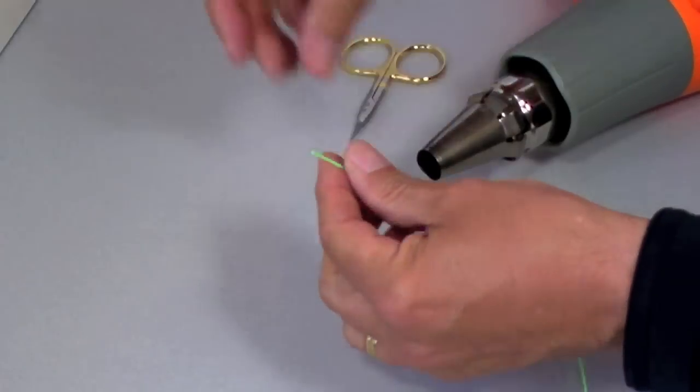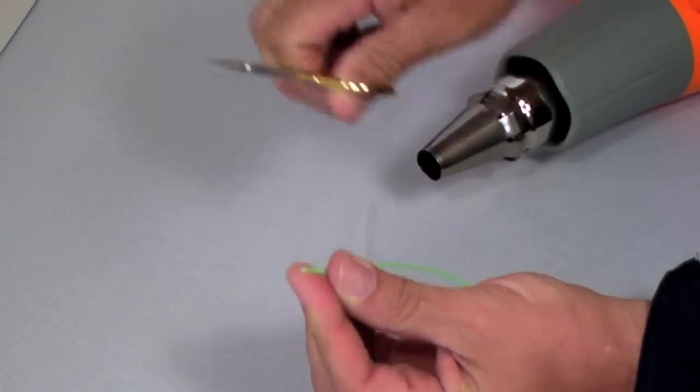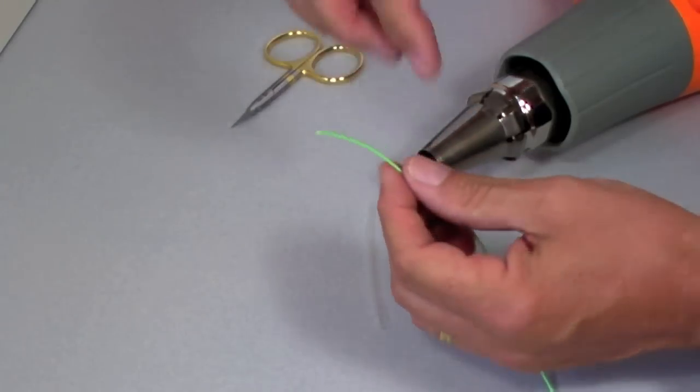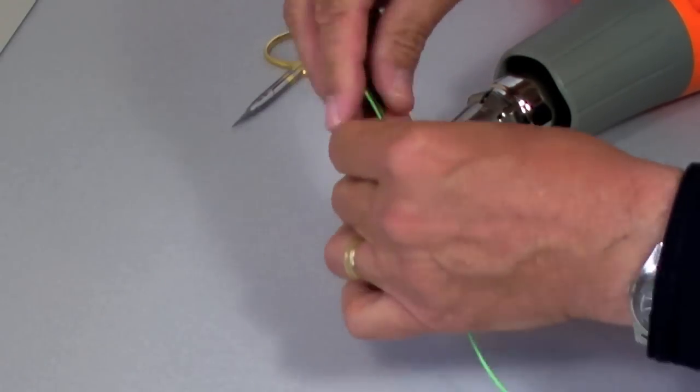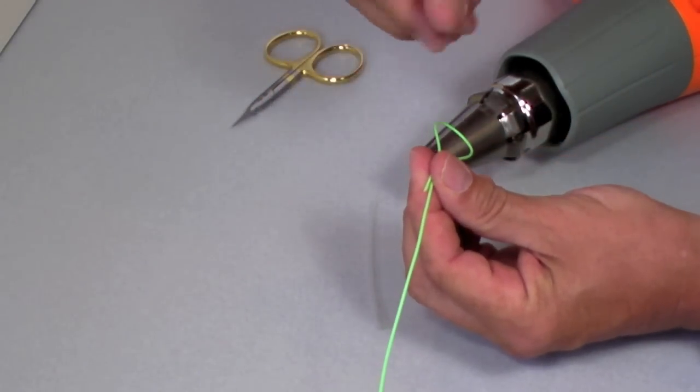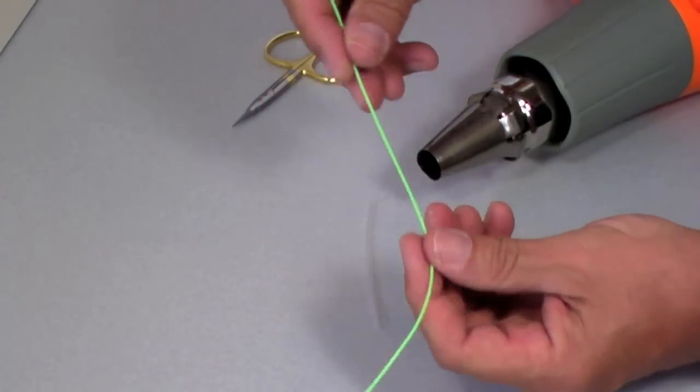The next thing we're going to do is take our fly line and just bevel the edge. The reason why we do that is to enable this edge to flow in. As we fold around here, we want it to flow into the main line. Now we don't want a lump here which could catch when we're fishing. If you're pulling in on the guide, if there was a lump it could catch on the guide.